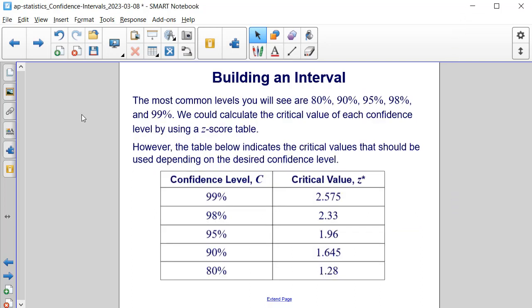The most common levels of confidence intervals that you will see are 80%, 90%, 95%, 98%, and 99%. We could calculate the critical value of each confidence level by using a z-score table. However, the table below indicates the critical values that should be used depending on the desired confidence level. Meaning, instead of looking at the z-score table, we're actually providing that critical value or z-score value for the confidence level of accuracy that's being desired.